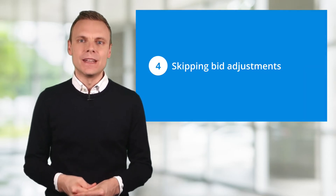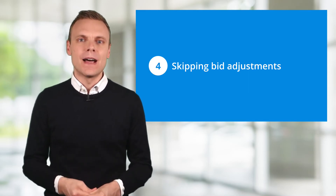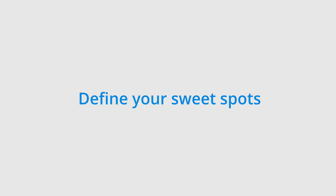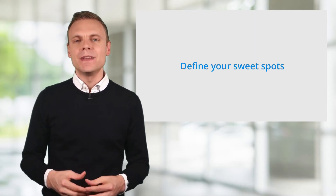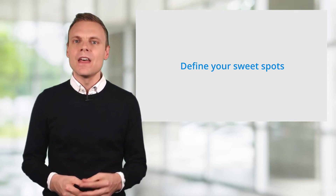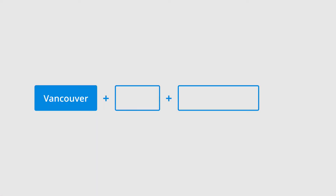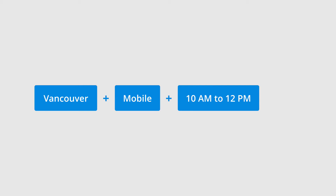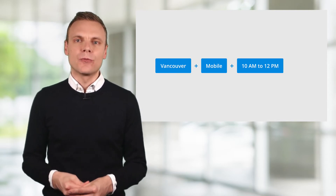Mistake number 4 is skipping bid adjustments. If you're not using bid adjustments, you might not be maximising your campaign results. Think of bid adjustments as a way to define the sweet spots for your campaigns — ensuring your ads are seen by the right people at the right time. Bid adjustments allow you to increase or decrease your bids based on a person's geographic location, the device they're using, and the time and day of week. For example, if people in Vancouver using mobile devices between 10 am and 12 pm on a weekday are more likely to convert, you can use analytics insights to increase your bids accordingly.